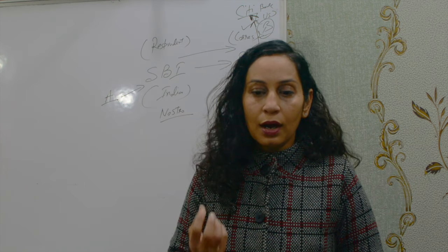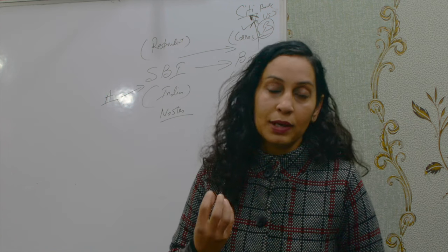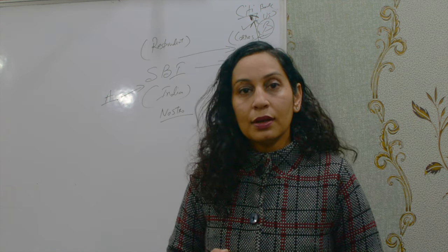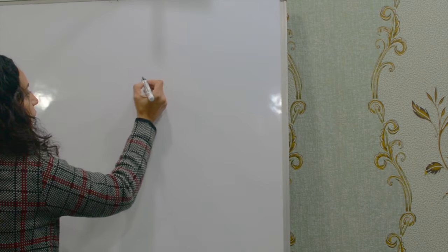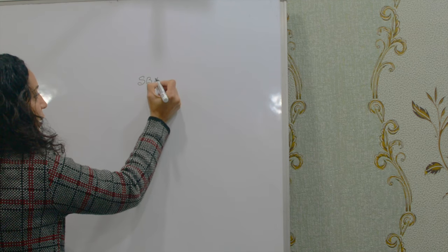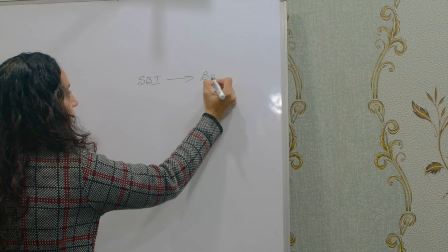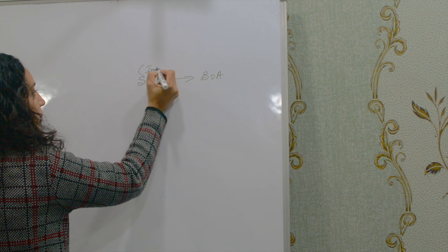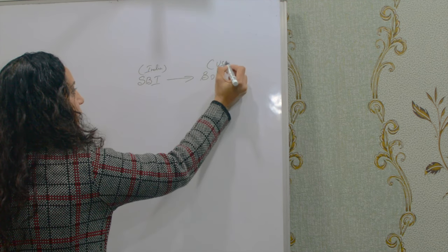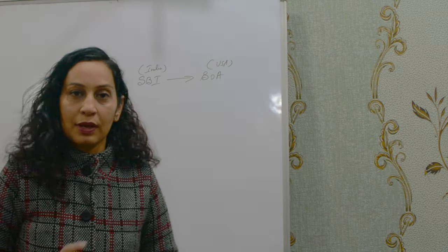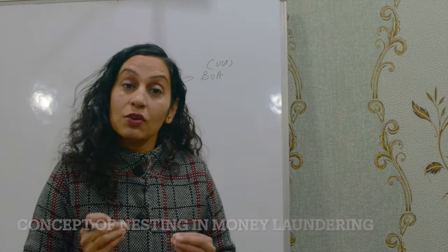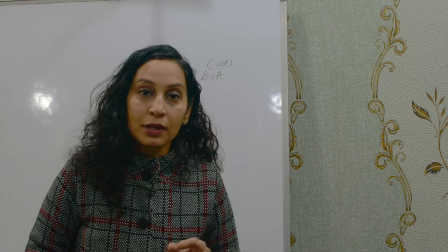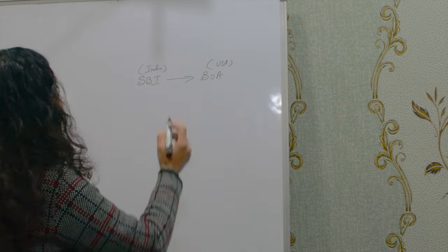Now let's understand how this correspondent banking relationship can be exploited for money laundering — specifically through a concept called downstreaming or nesting. Let's say SBI and Bank of America have checked each other, are convinced, and have done proper due diligence. Now there is a concept called nesting — let's understand what it is.